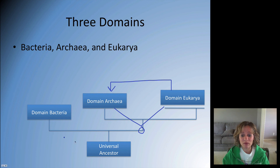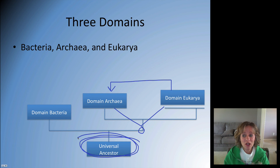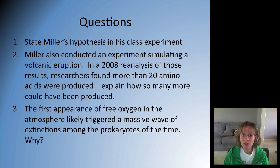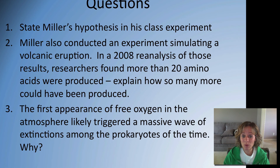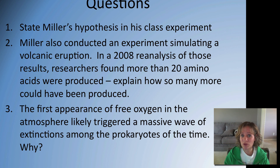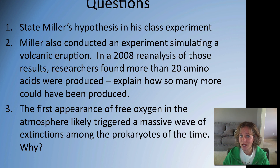So this is the three domains and the tree of life putting it all together — yes, we have a universal ancestor. For homework: state Miller's hypothesis and describe his classic experiment. Miller also conducted an experiment simulating a volcanic eruption; in 2008, scientists re-analyzed this and found more than 20 amino acids were produced compared to his classic experiment — explain how so many more could have been produced. And lastly, the first appearance of free oxygen in the atmosphere likely triggered a massive wave of extinctions among prokaryotes of the time — why do you think that is? Bring your video notes and answers to these questions to class.